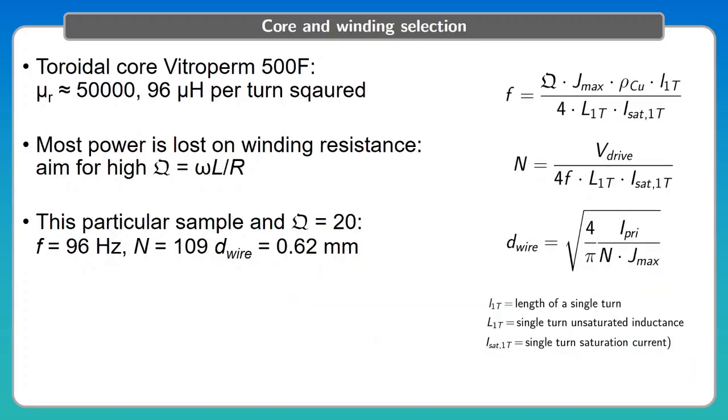The core that we used is a commercial product from Vacuumschmelze. It is Vitroperm 500F. It has high permeability and a very linear, narrow B-H curve.